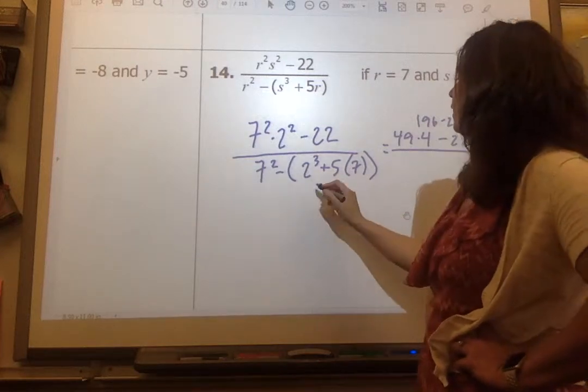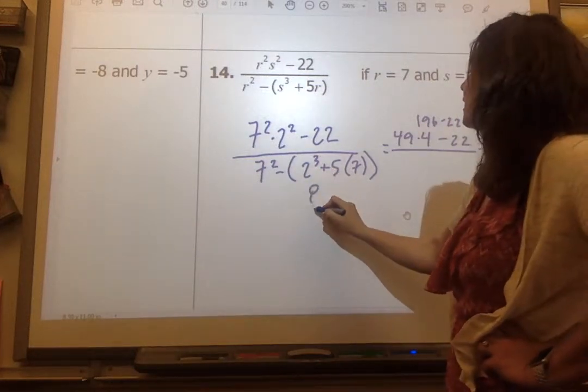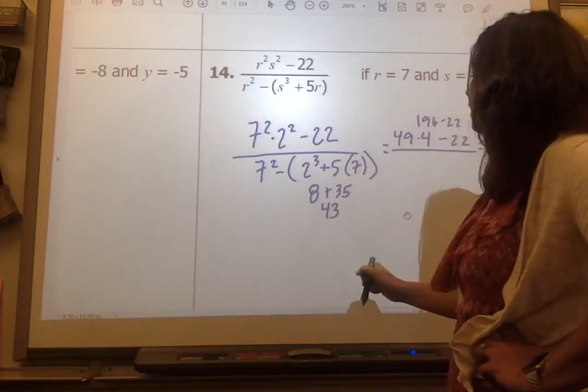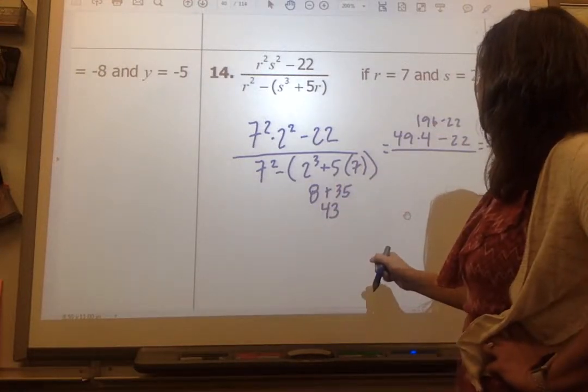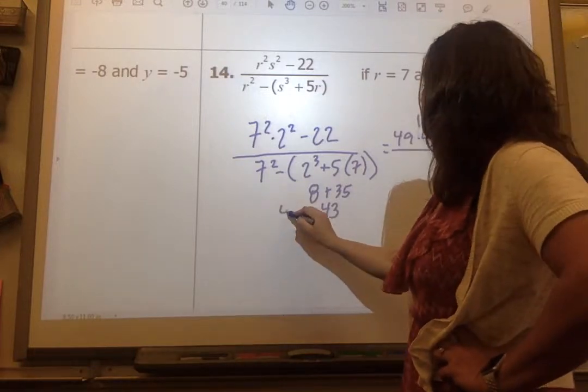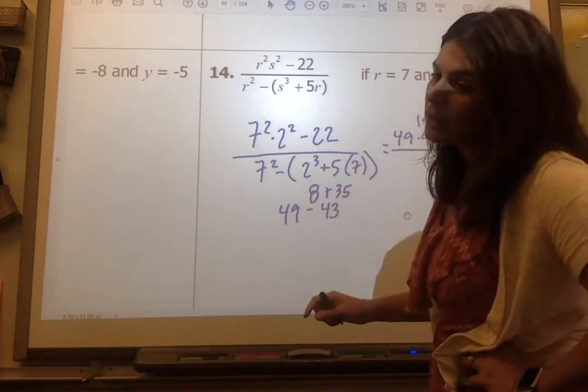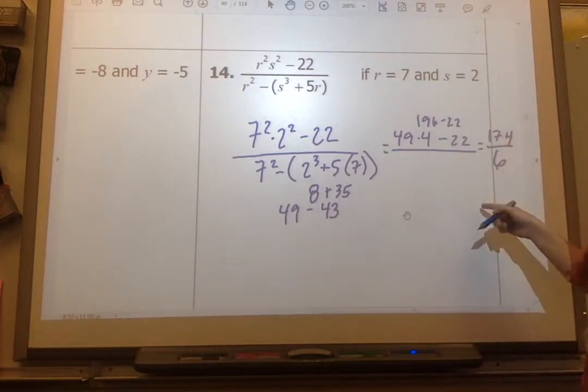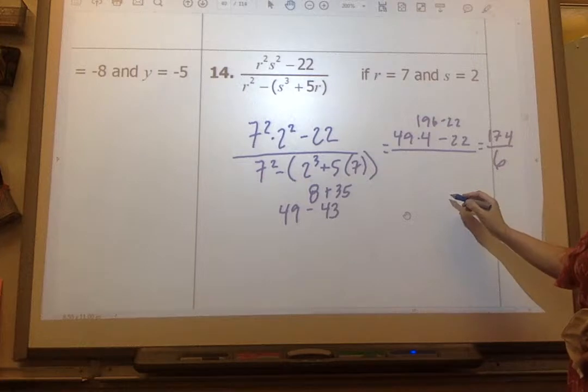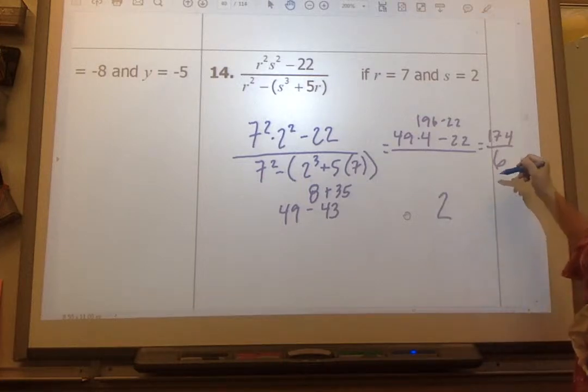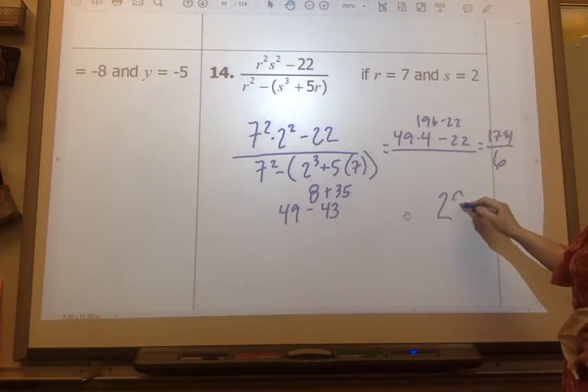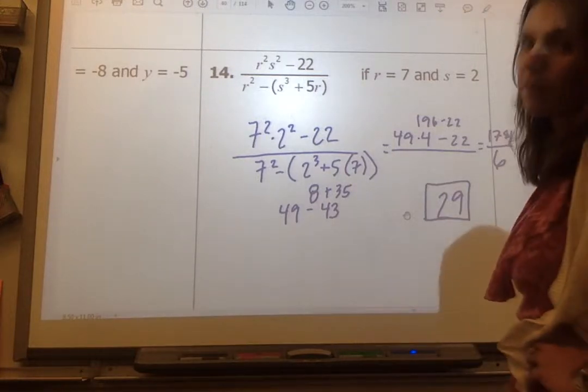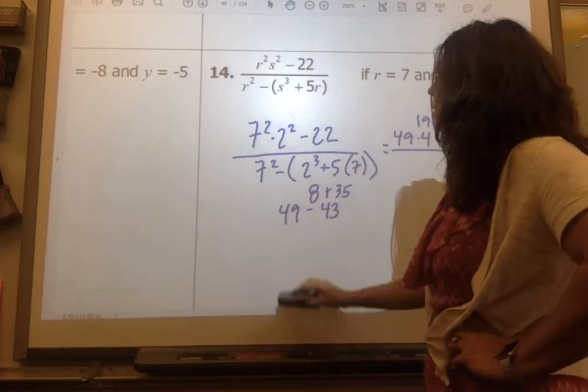And my denominator, I'm going to work it down here. I get 2 cubed is 8 plus 35, and 8 is 43, and then 7 squared is 49. 49 minus 43 is 6. So my denominator is 6. 6 goes into 174 two times, 5 left over, and 6 goes into 54 nine times. So my answer here is 29.